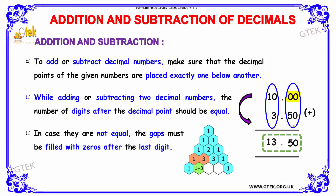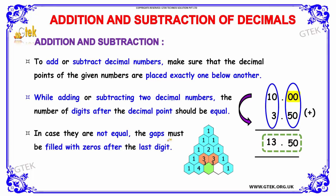In case they are not equal, the gaps must be filled with zeros after the last digit. We have filled zeros in the first term. These are the points which we must keep in mind before doing problems based on addition and subtraction of decimals.